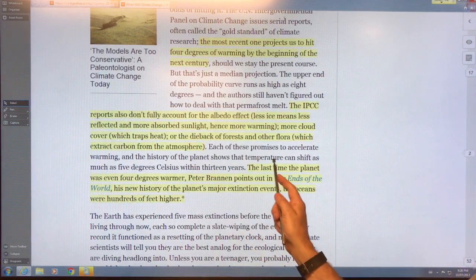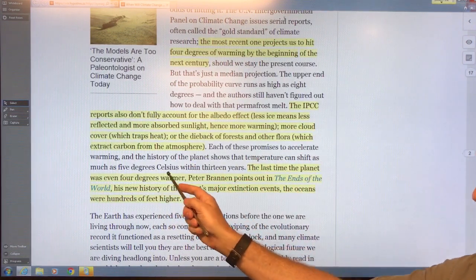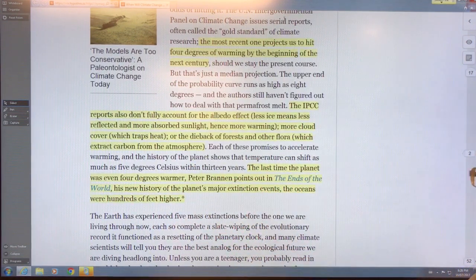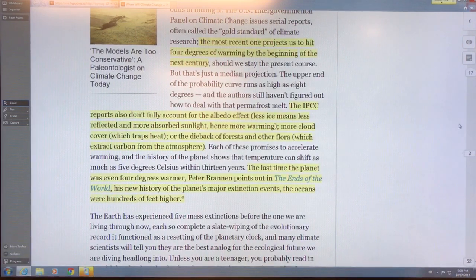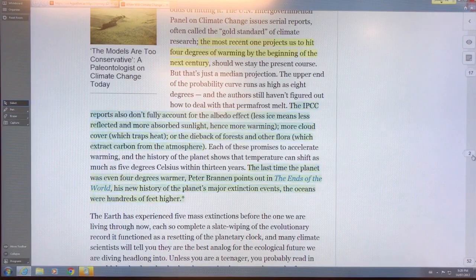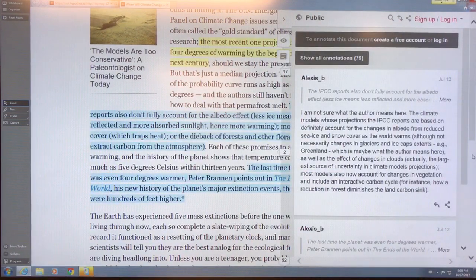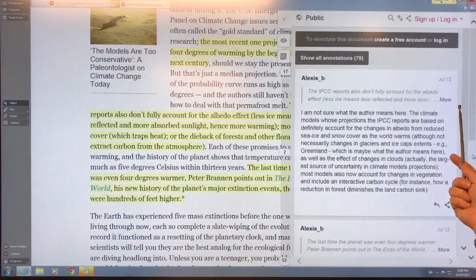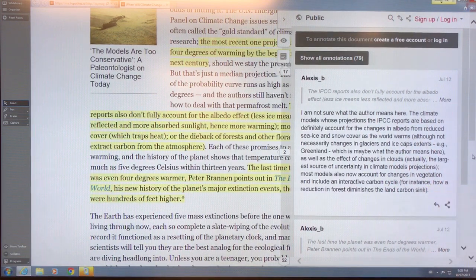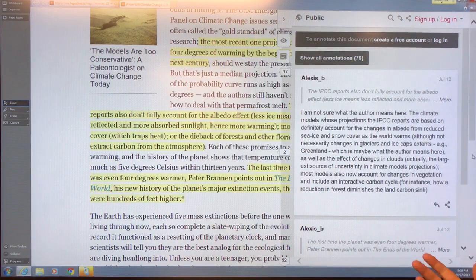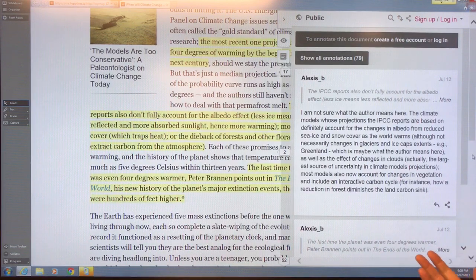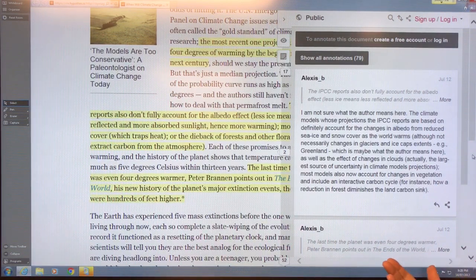The history of the planet shows the temperature can shift as much as five degrees Celsius within 13 years. Think about that. Let's look at the comment. Don't fully account for the albedo. I'm not sure what the author means here. Well, I think it's pretty clear what the author means. The reports don't account for all of the changes that are happening because things are happening much faster than expected, so how could they be accounted for properly?